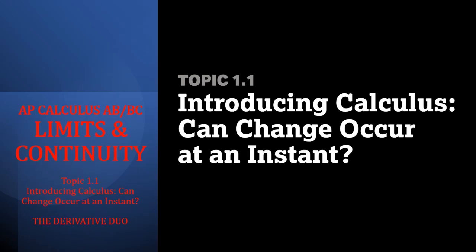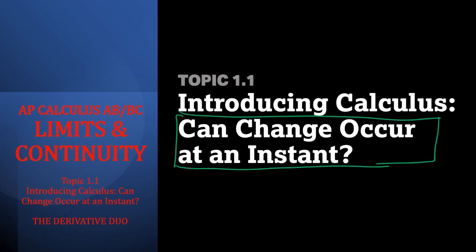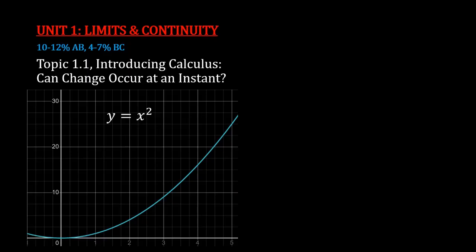So you've just started AP Calculus AB or BC and you are just beginning to understand what calculus is. The key question in calculus is: can change occur at an instant? Calculus is the study of change, and through this first unit — limits and continuity — you're going to understand exactly what that means.